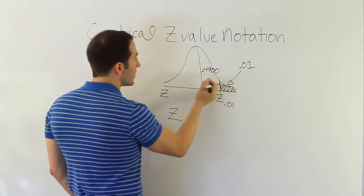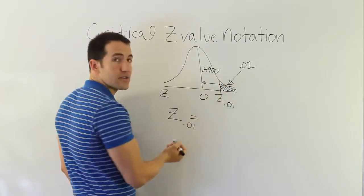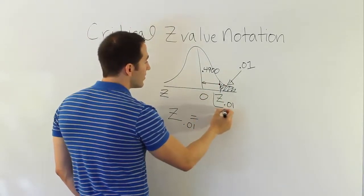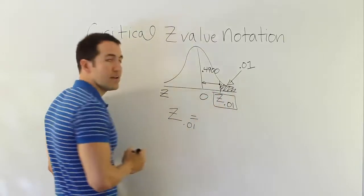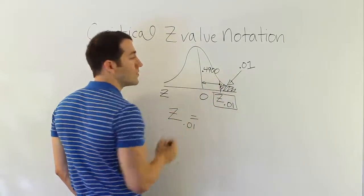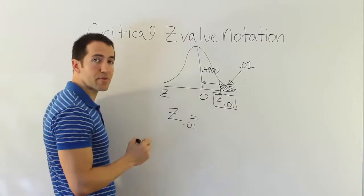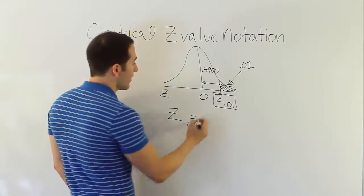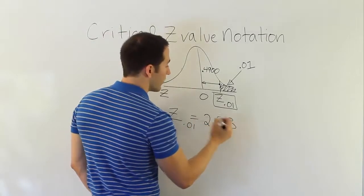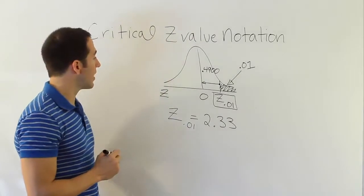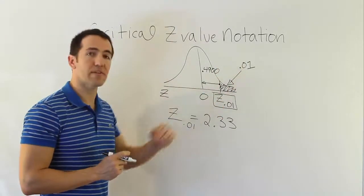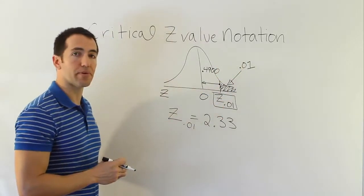If I look up .4900 on my z-chart, I will find a corresponding z-score. If you go to your z-chart right now and look up .4900, the closest number you will find is 2.33. So that would be the corresponding z-score that leaves only 1% of the area in the upper tail.